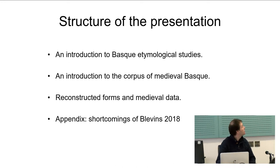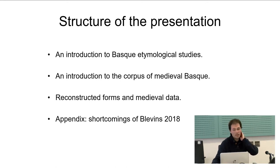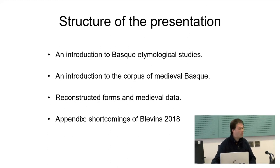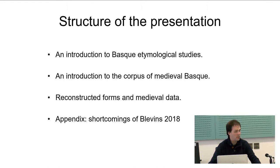In section two I will describe what we understand by medieval data in Basque studies and what kind of corpus we have. Section three addresses the relevant data and discussion of this talk — I will present a list of reconstructed words and morphs and show that recently discovered medieval data actually proved that reconstructed forms were right. And finally, if I have time, I will make an assessment of Blevins' reconstructive proposals.